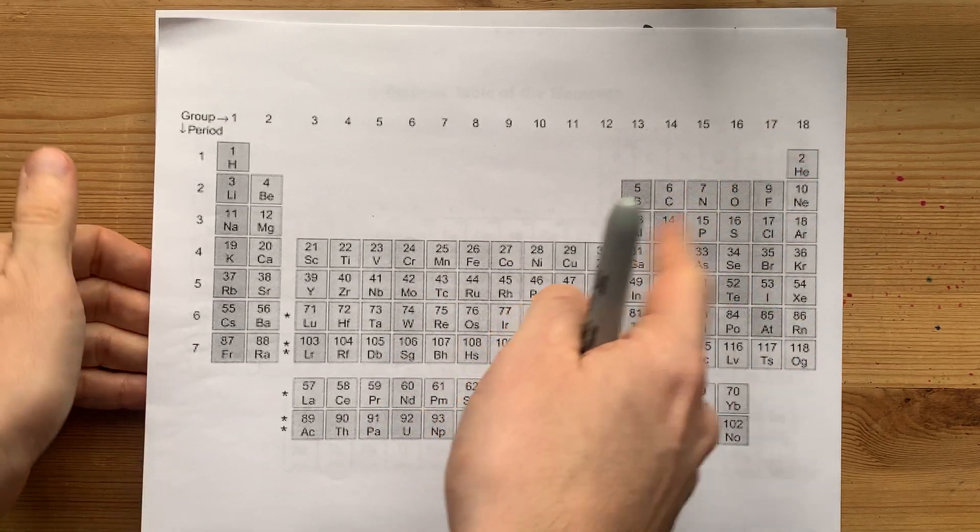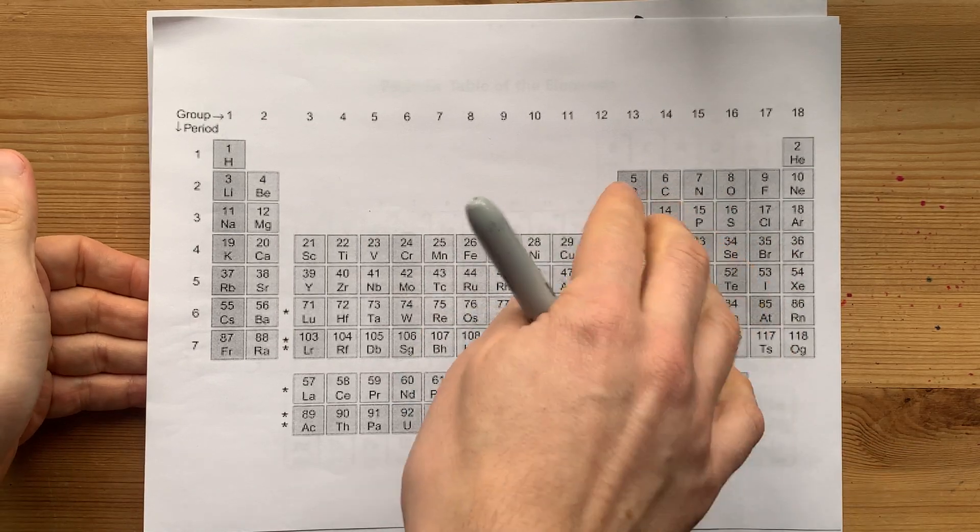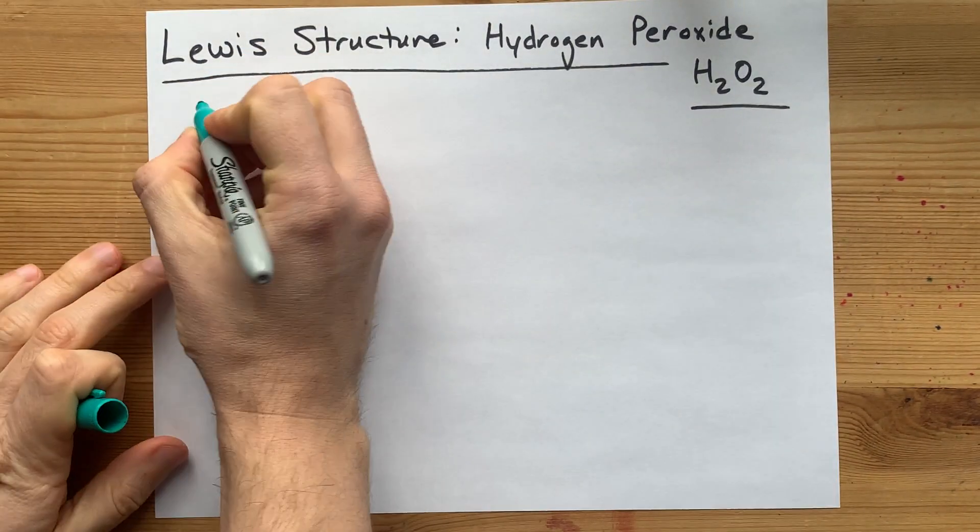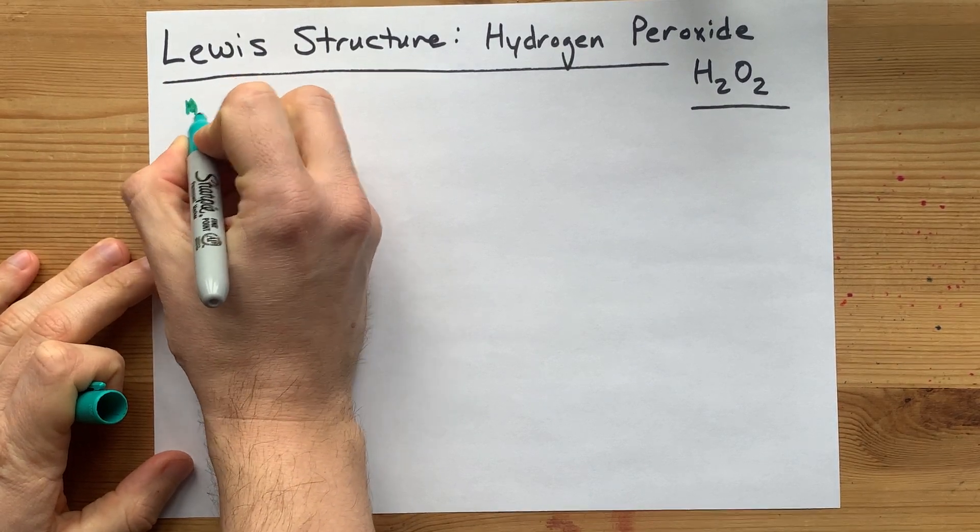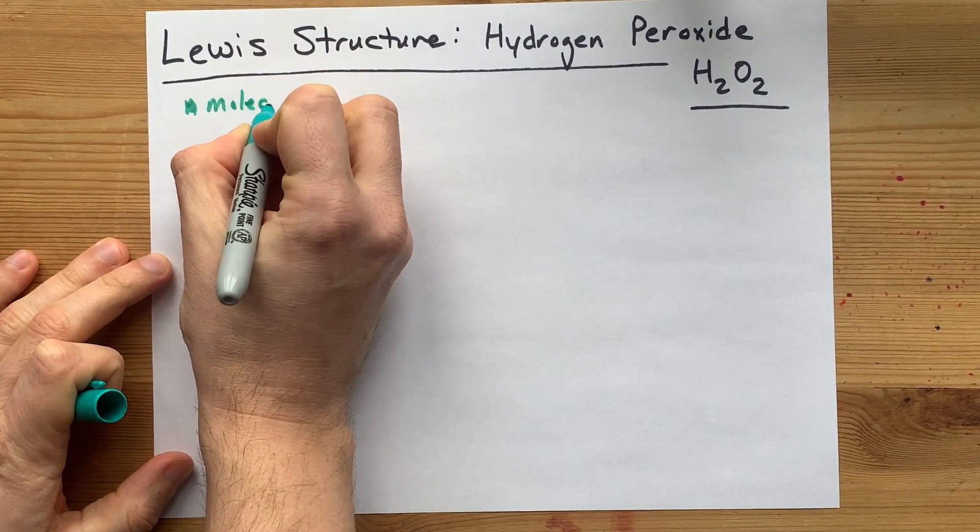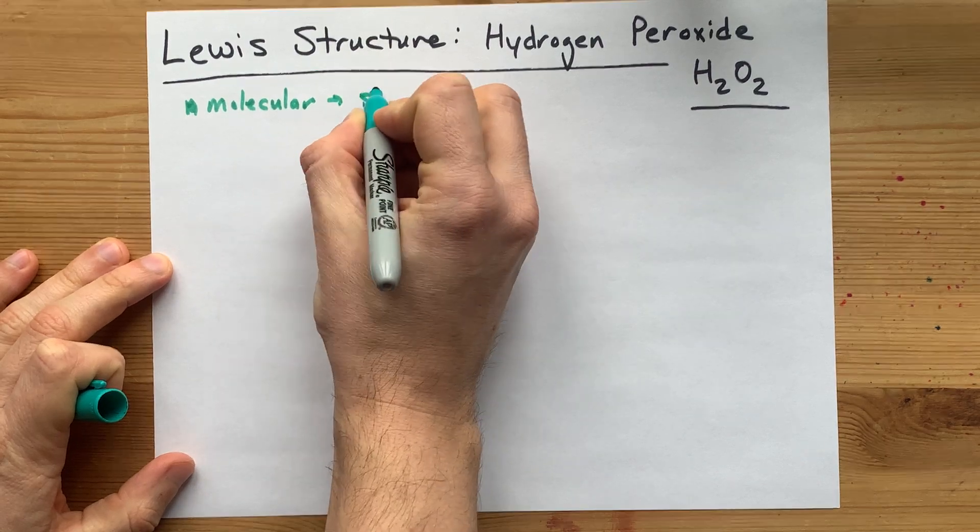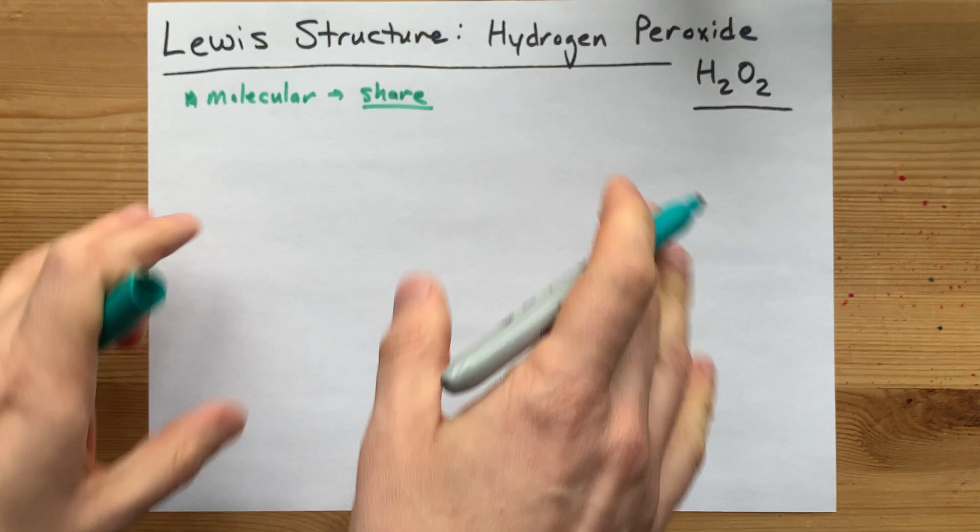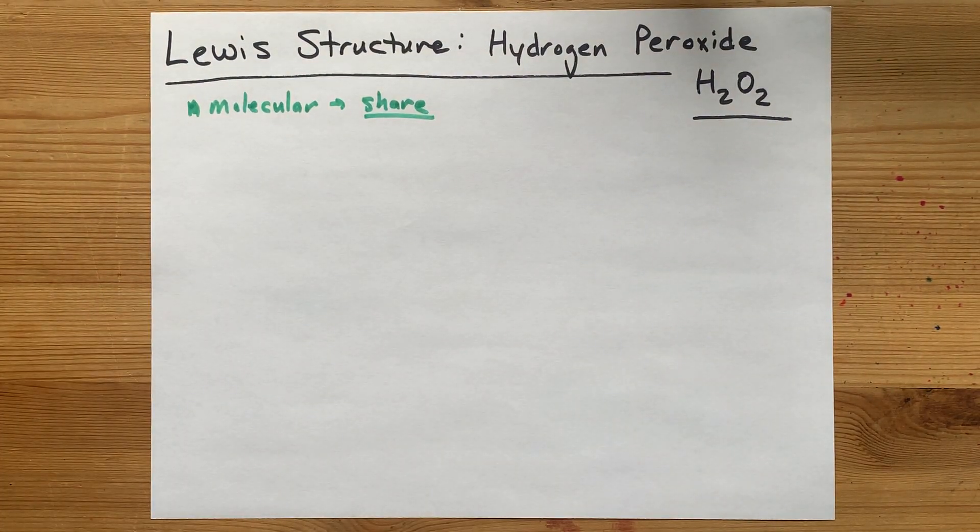Oxygen is definitely a non-metal because it's in the non-metal section to the right of the staircase. The fact that they're both non-metals means that it will form a molecular or covalent compound, which means that they will share electrons with each other until they each have a full outer shell.